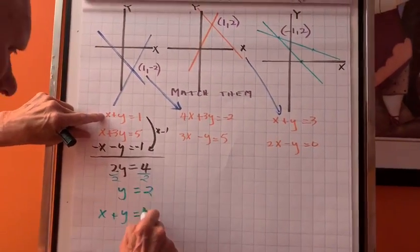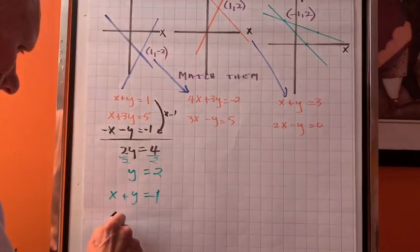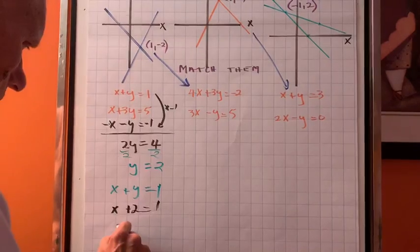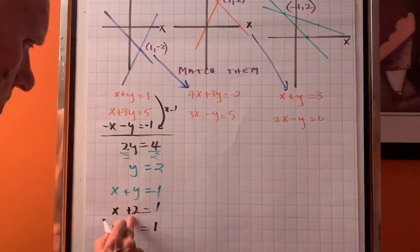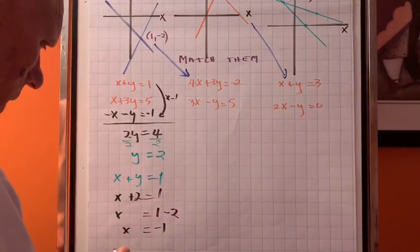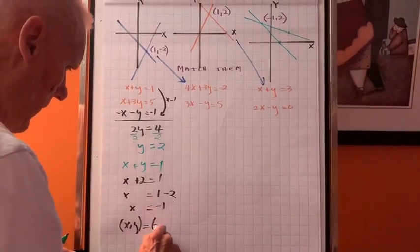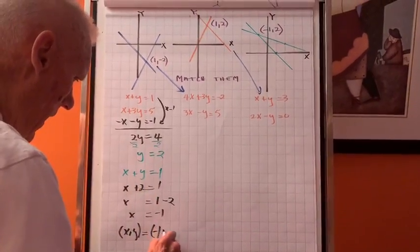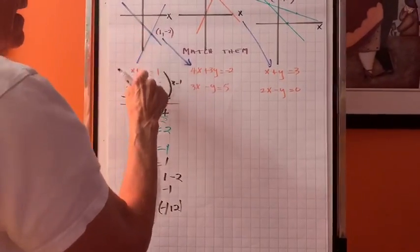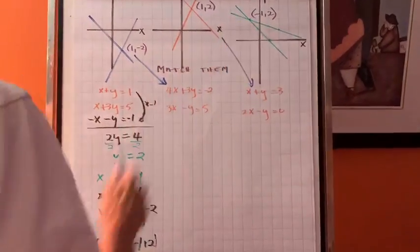Now let's go back into this equation and let's put two in for y. So it becomes x plus two is one. Transpose. X is negative one. Therefore the pair x, y where the lines cross is negative one and two. Negative one and two goes with this one over here.